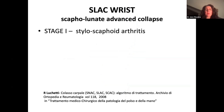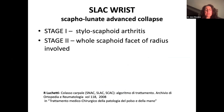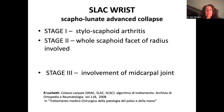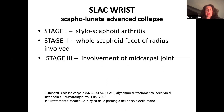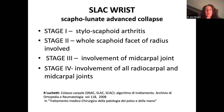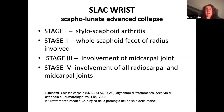We know from Watson that in SNAC stage one, we have radiostyloid-scaphoid arthritis. In stage two, the whole scaphoid facet of the radius is involved. In stage three, there is involvement of the mid-carpal joint, and in stage four, all the radiocarpal and mid-carpal joints are affected.